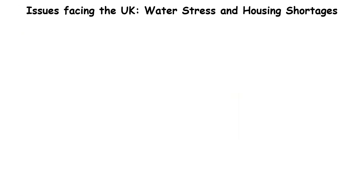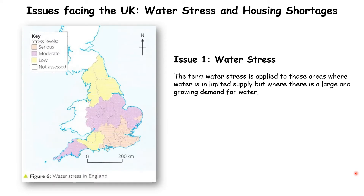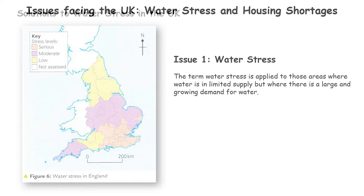Finally, we're going to look at two issues facing the UK: water stress and housing shortages. An area under water stress is where water is in limited supply but there's a very large and growing demand. Looking at the diagram, it's the southeast where there's the largest amount of water stress. Firstly, as we've seen, it rains in the north and west, so the southeast gets very little rain. Secondly, London — the capital city — has 8 million people, creating a large demand for water, while receiving less rain than the north and west.